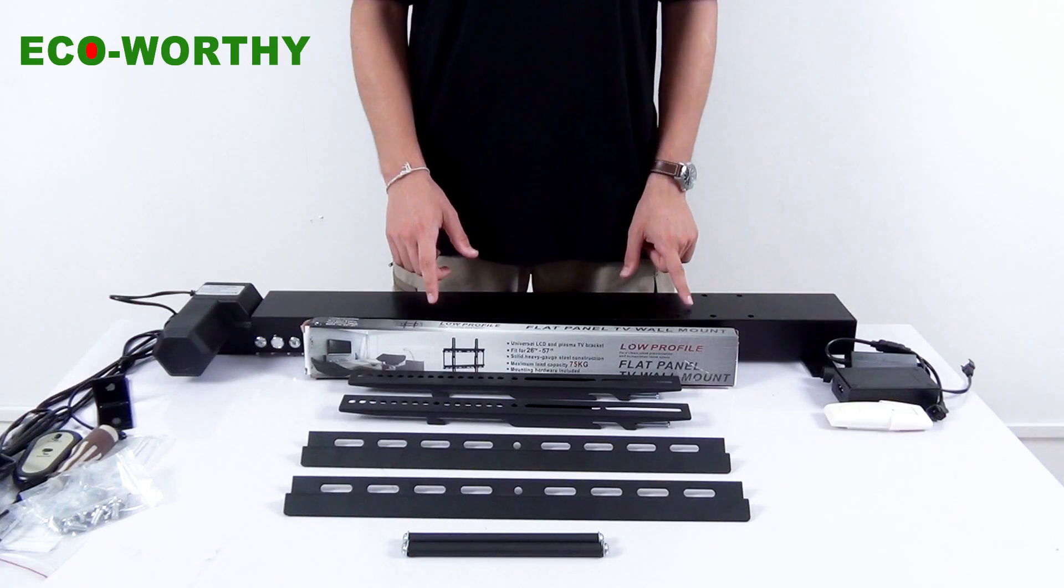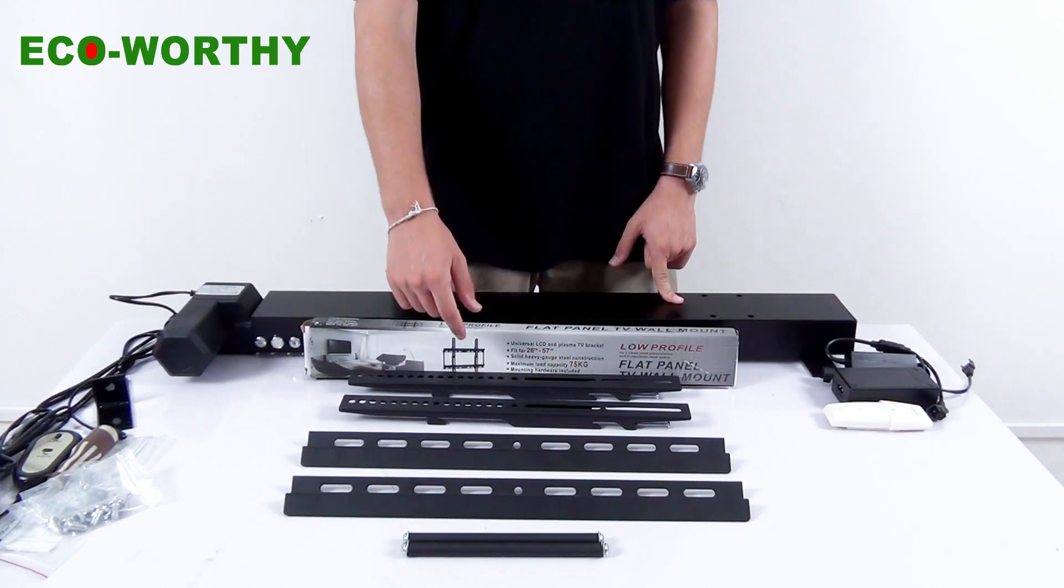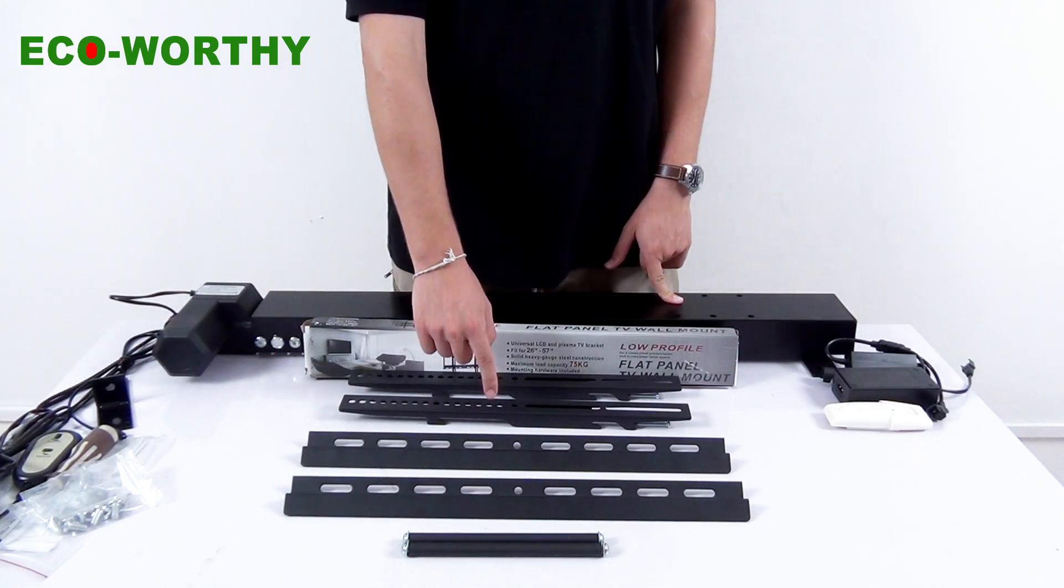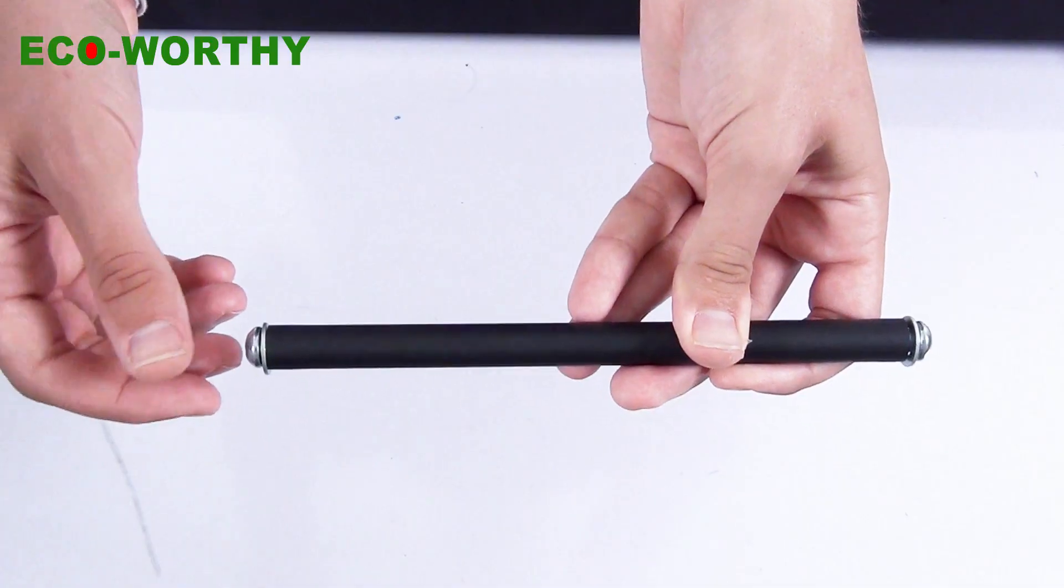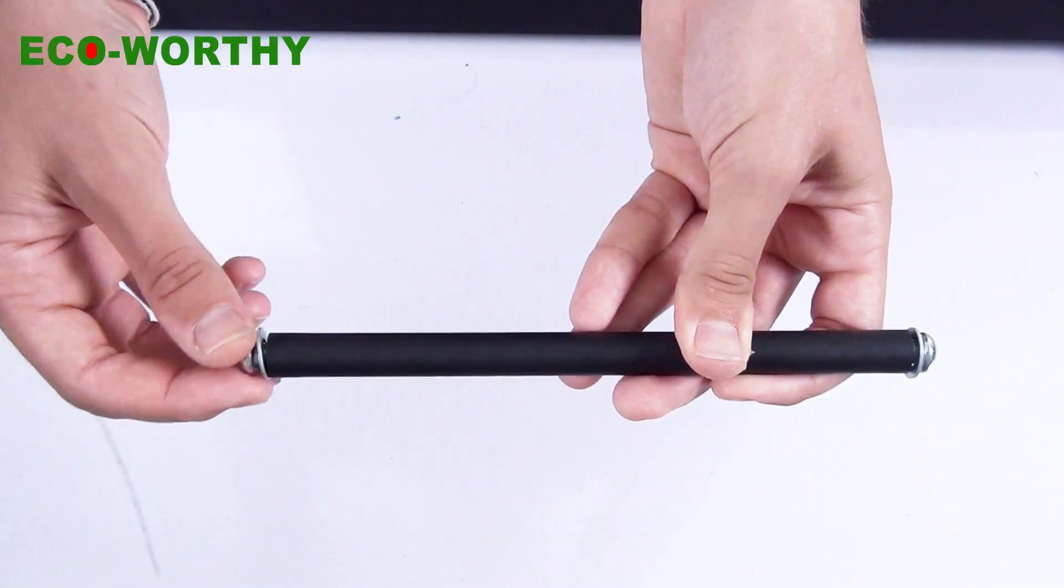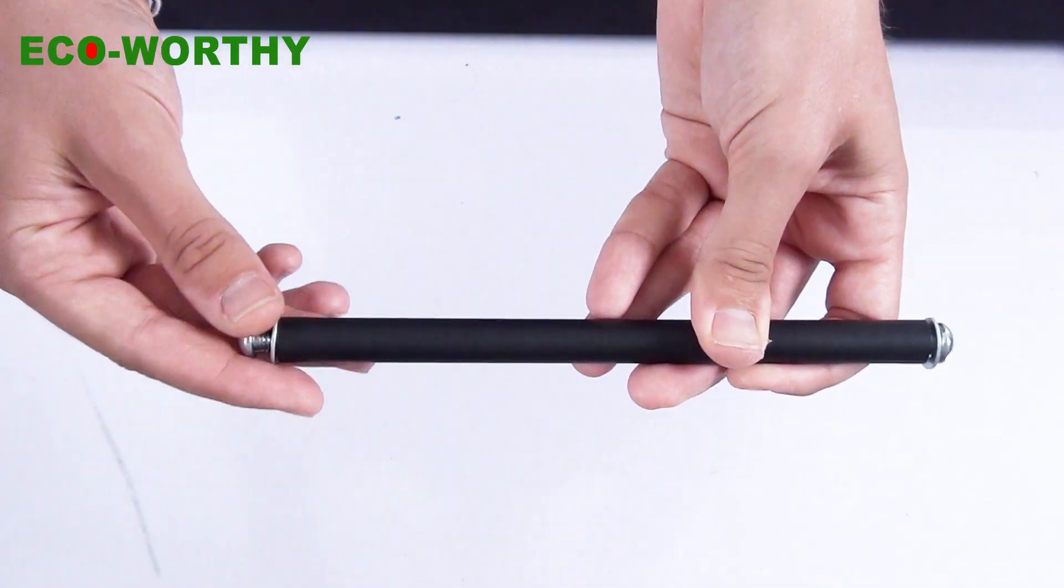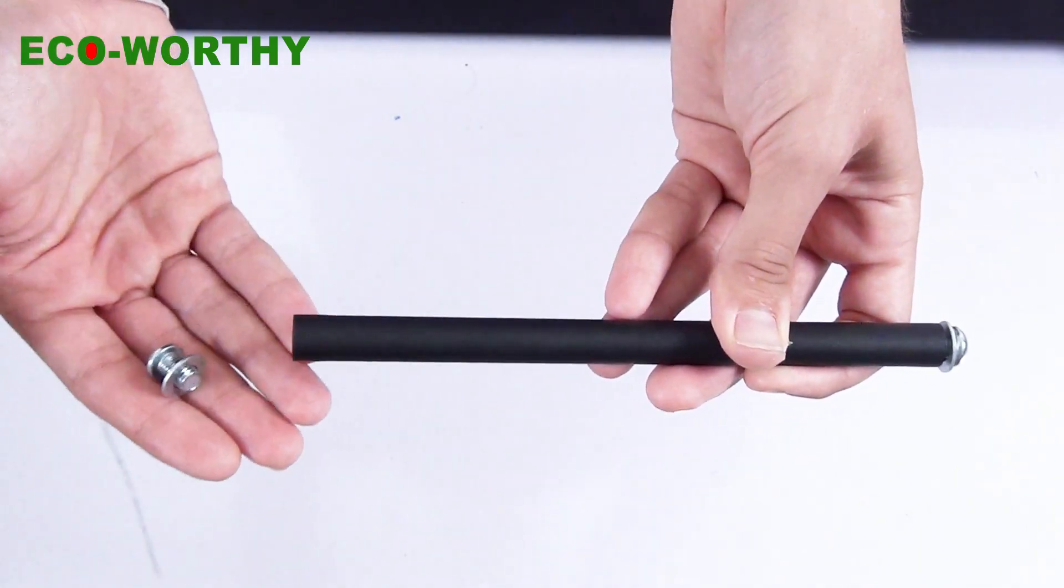Let's begin the installation. We are going to use this box, which includes the TV brackets. They already have screws installed, so we need to remove them and through the hole, then screw down.